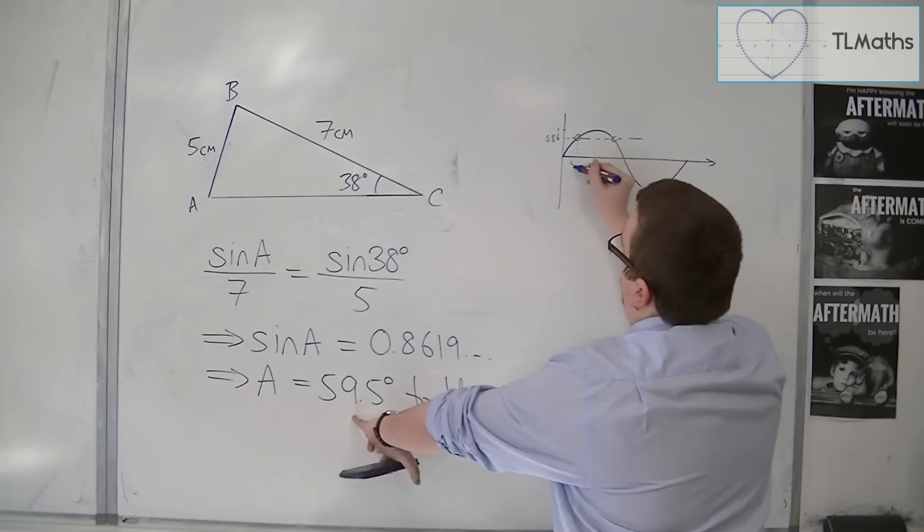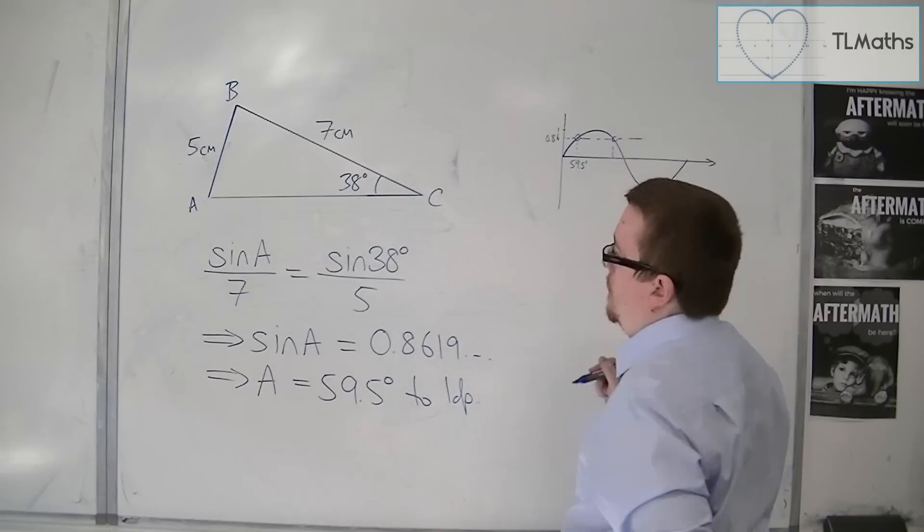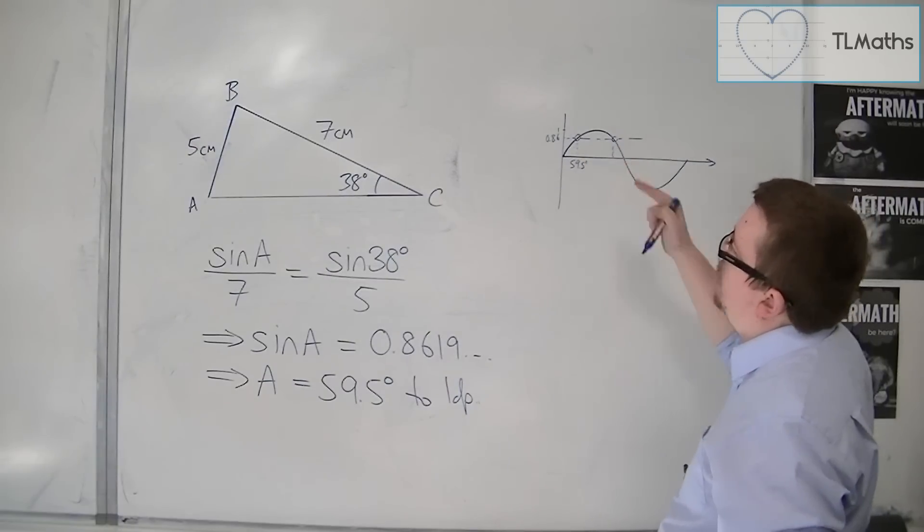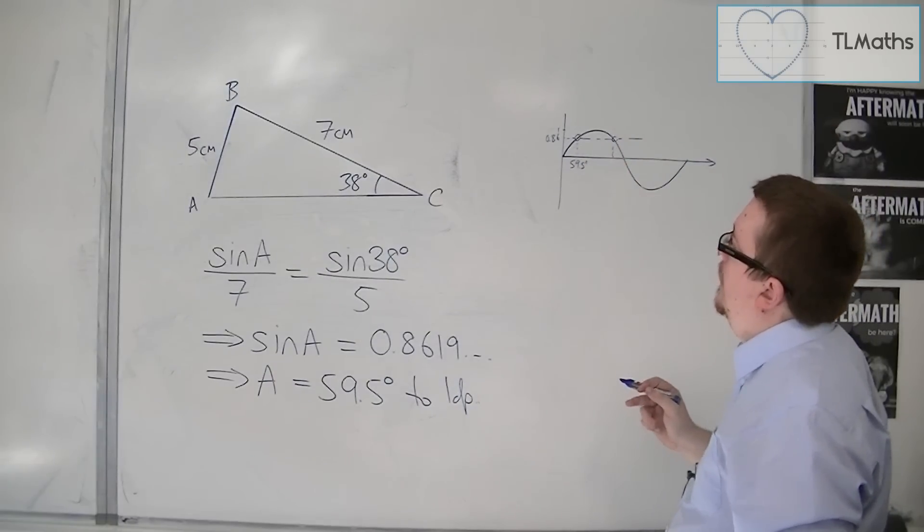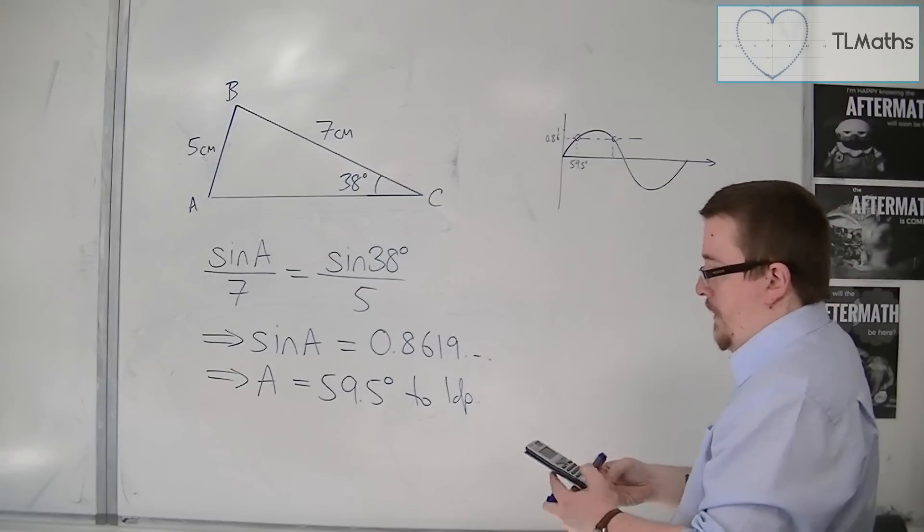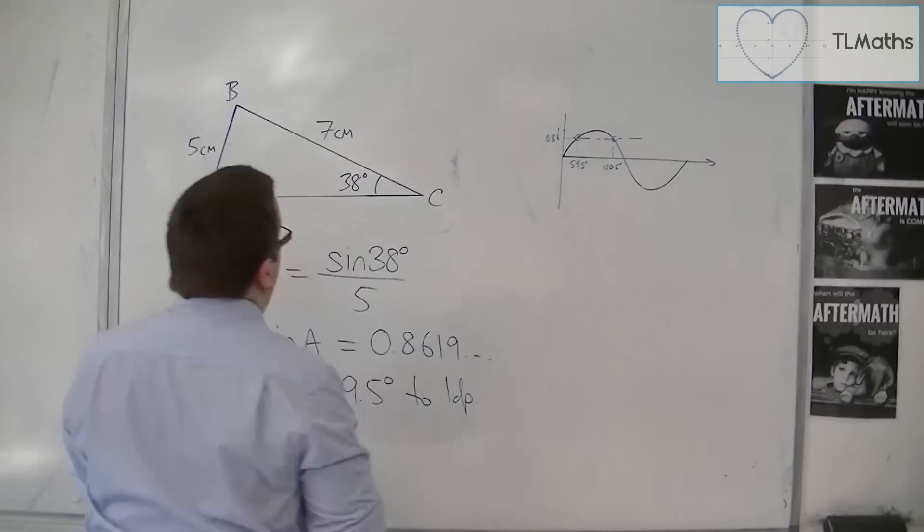We've got one there, that 59.5 degrees. But there is another one between 0 and 180. And that angle is 180 take away that, so that would be 120.5 to one decimal place.